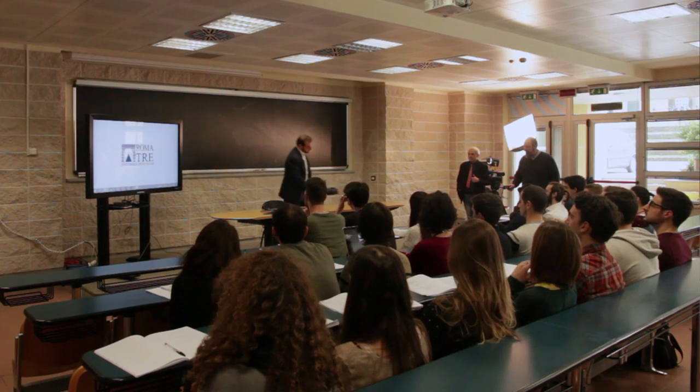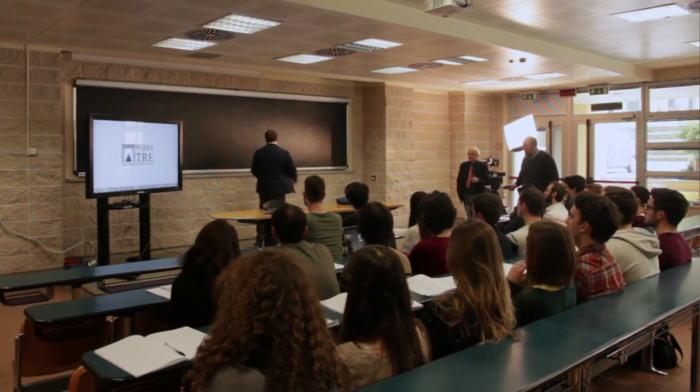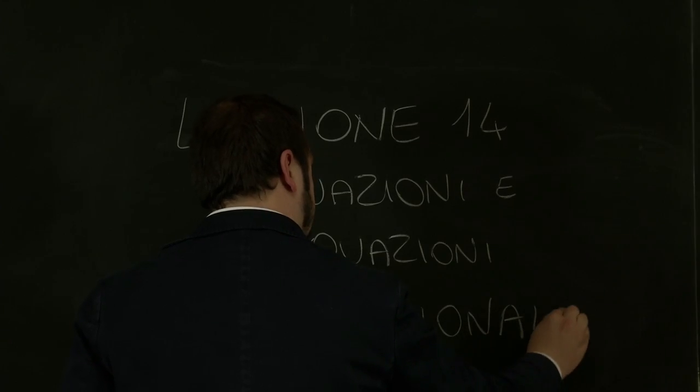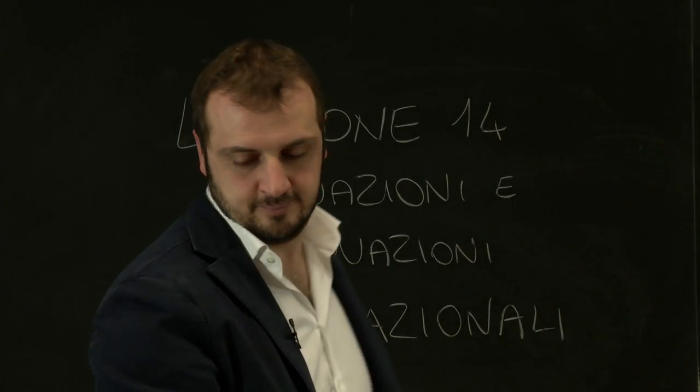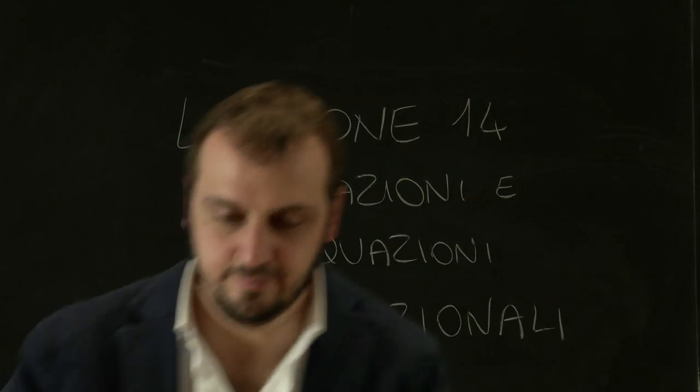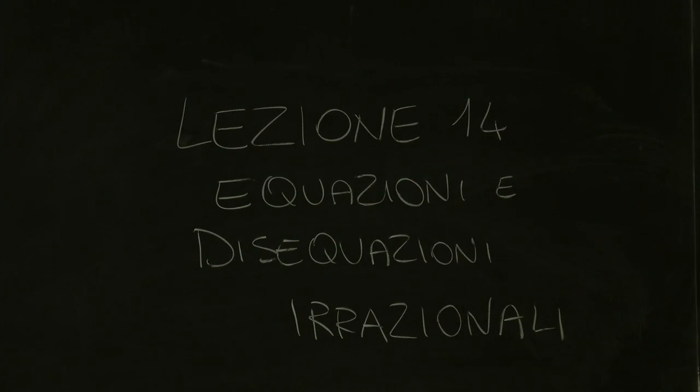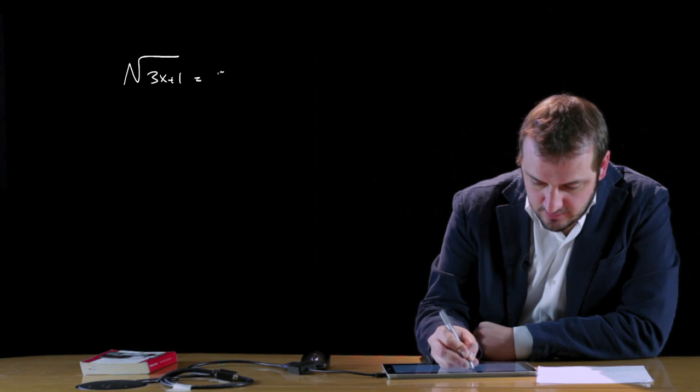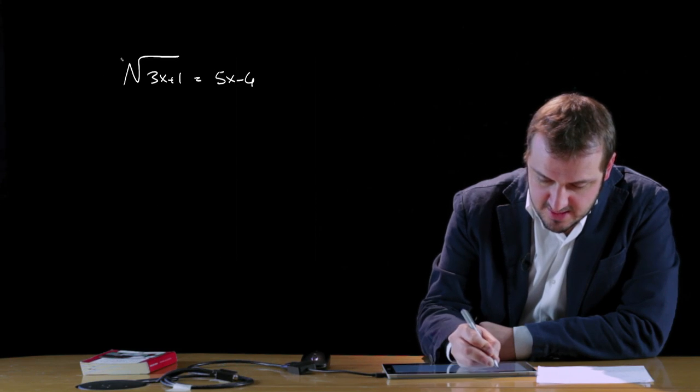Good morning everyone. Today we will talk about equations and inequalities involving radicals (irrazionali). Un'equazione irrazionale è un'equazione in cui l'incognita fa parte del radicando del radicale. Quindi, per esempio, la radice di 3x più 1 uguale 5x meno 4 rappresenta un'equazione irrazionale.